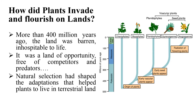Why are green algae the plant's closest living relatives? Because green algae use the same type of chlorophyll as land plants, store food as starch as plants do, and have cell walls made up of cellulose similar in composition to land plants. More than 400 million years ago the land was barren and inhospitable to life, but from an evolutionary point of view it was a land of opportunity — free of competitors, free of predators, and full of carbon dioxide and sunlight.